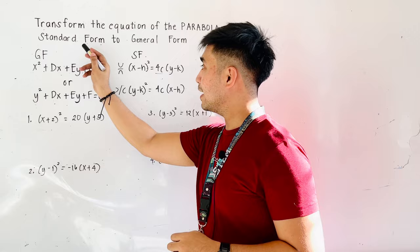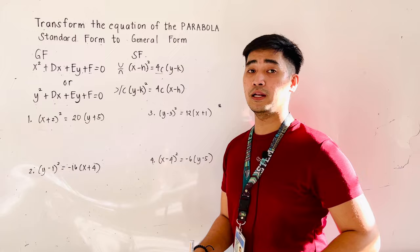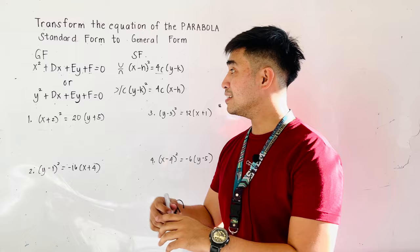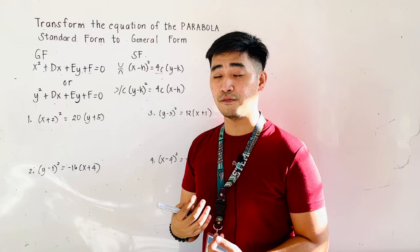All the given here, we have four problems. All the given here are in standard form of the parabola, and what we'll be doing is to transform this into general form. Again, this is the general form: x squared plus dx plus ey plus f is equal to 0, or y squared plus dx plus ey plus f is equal to 0. Where d is the coefficient of x, e is the coefficient of y, and f is the constant.